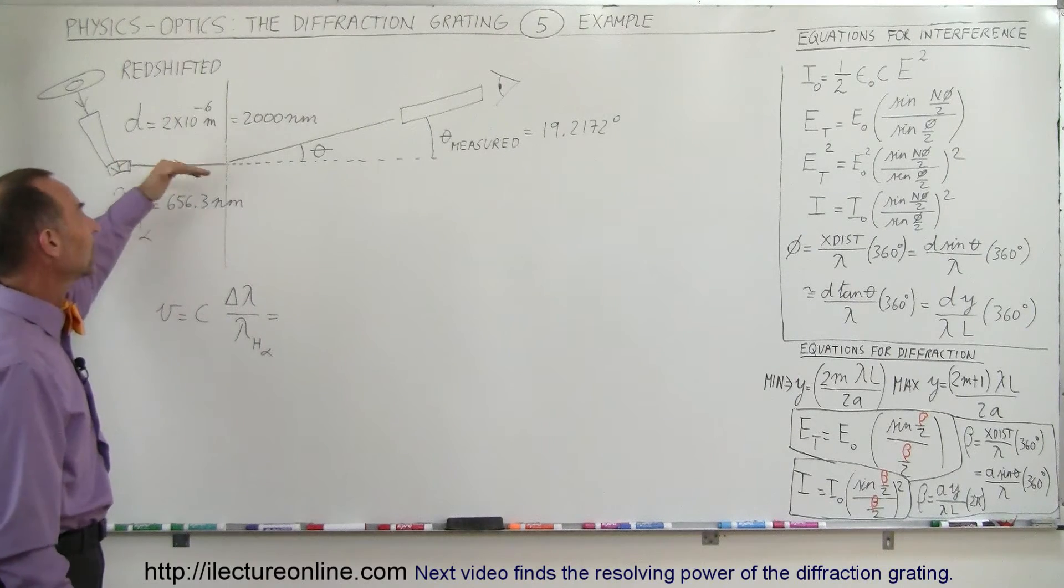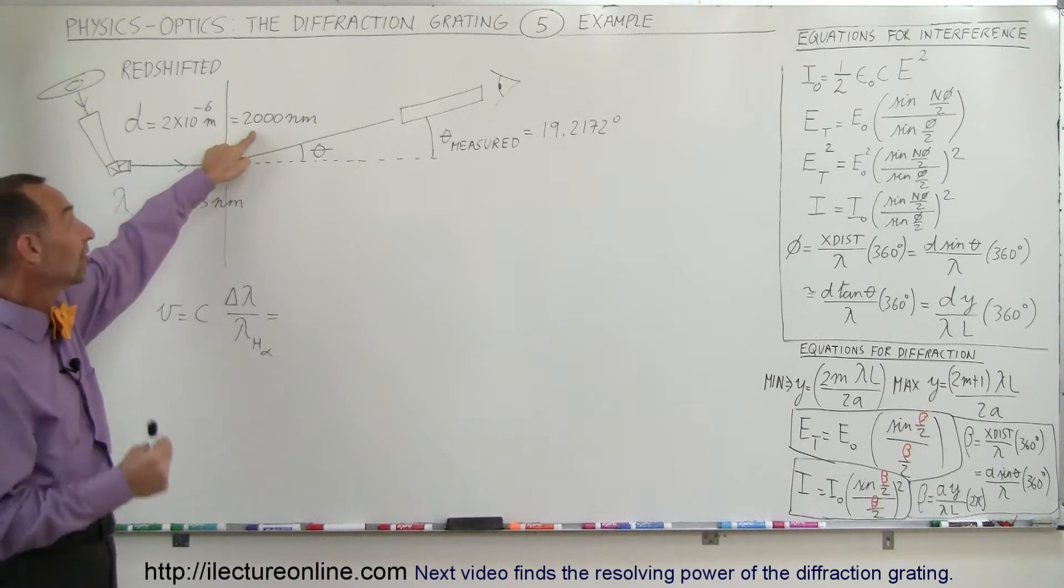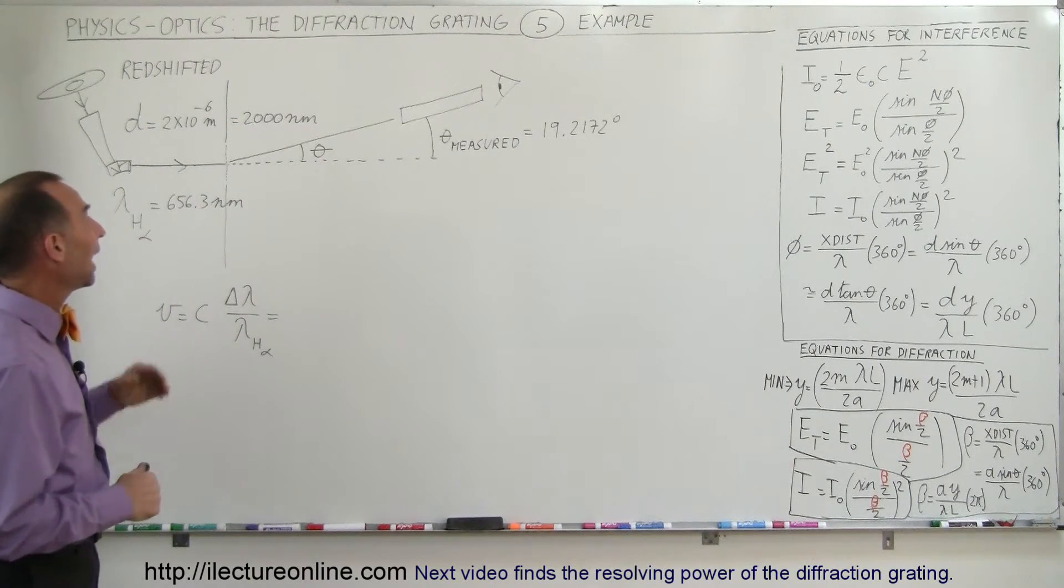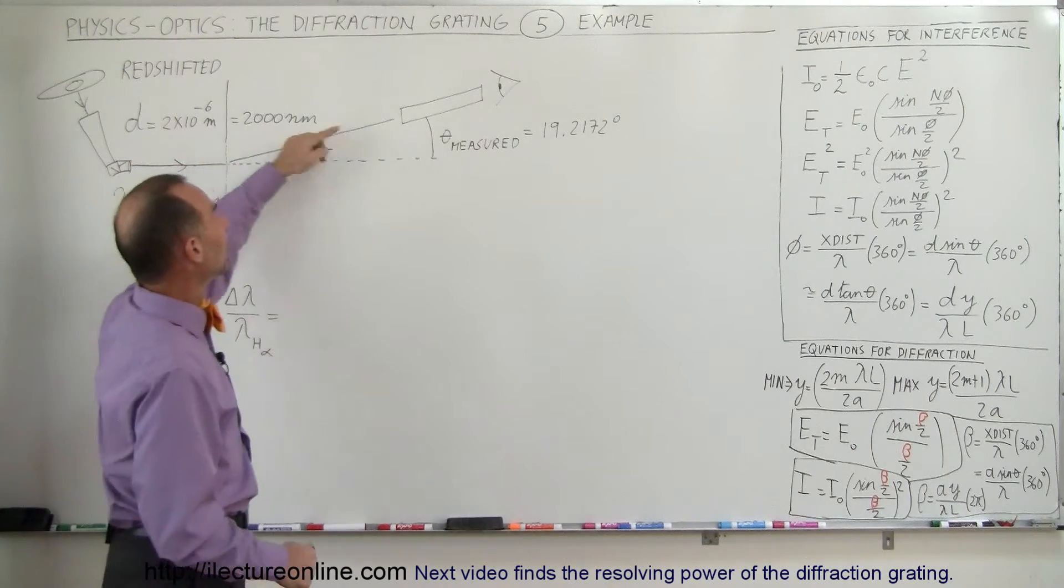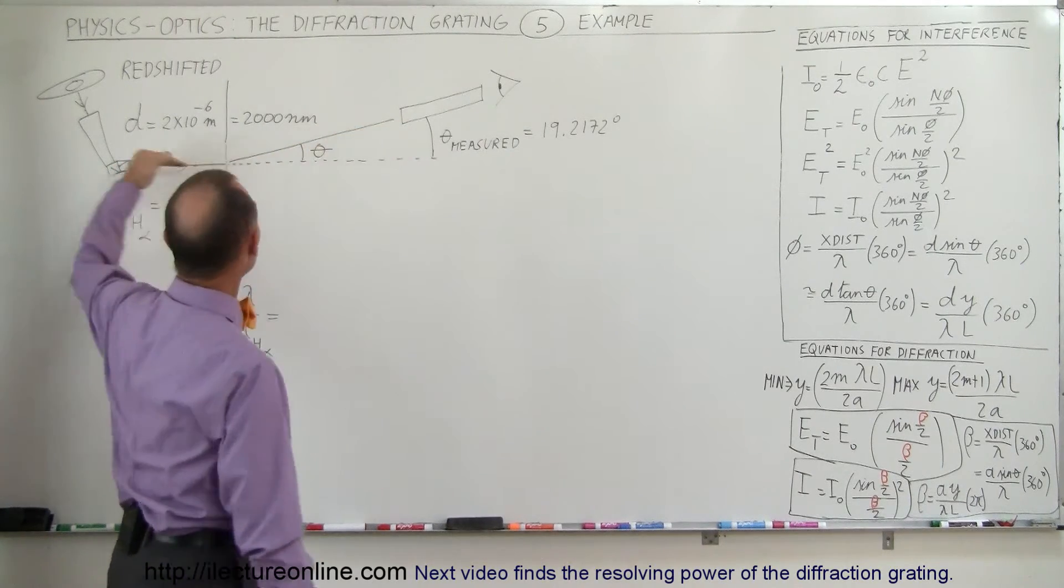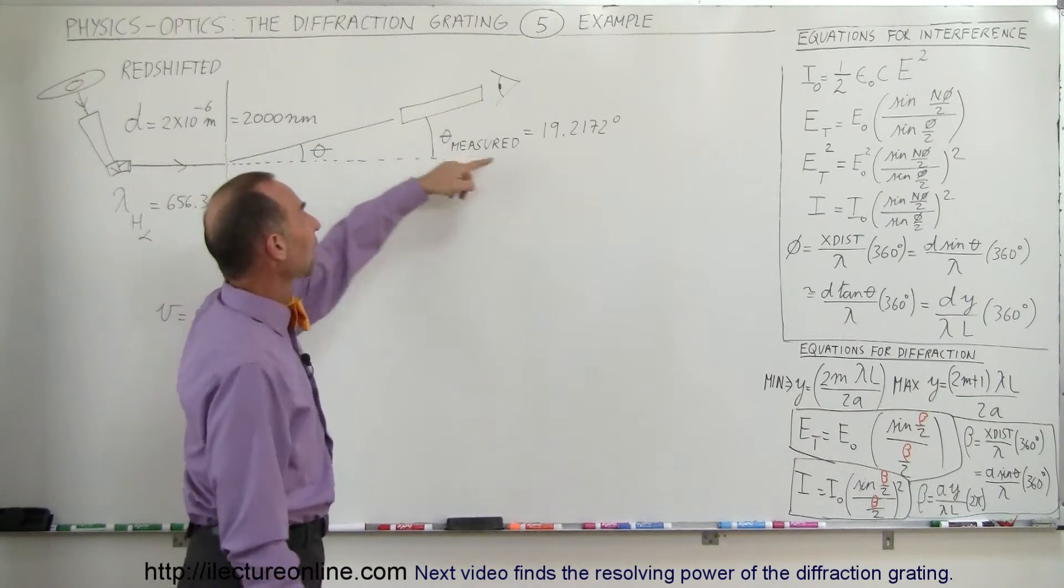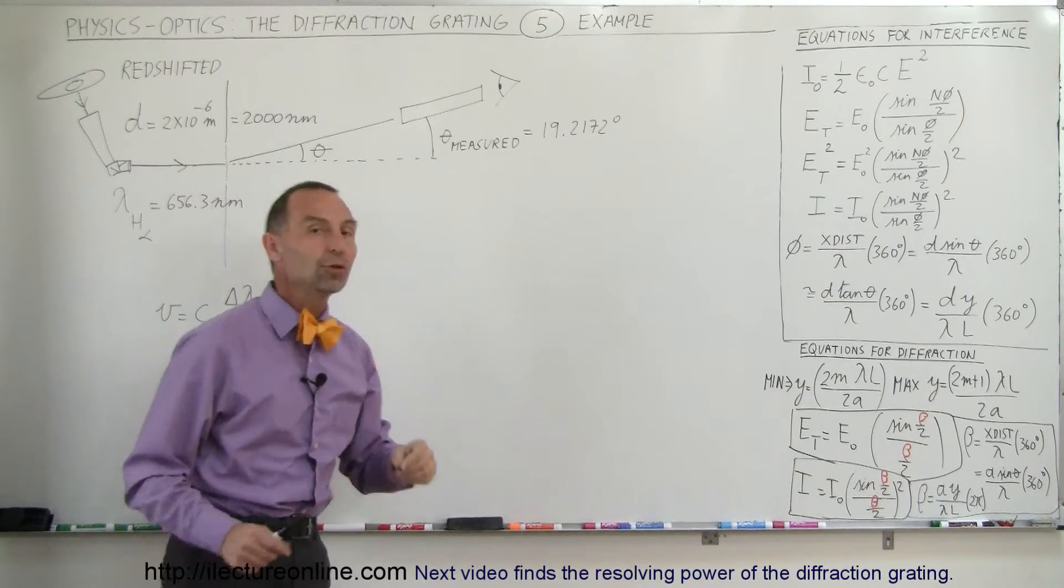The diffraction grating has slits in such a way that the distance between the slits is 2,000 nanometers, 2 times 10 to the minus 6 meters. And we measure the existence of the red light, the H-alpha line, we measure the angle of that to be 19.2172 degrees.